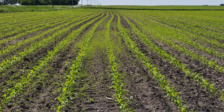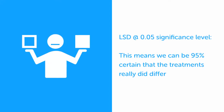A well laid out trial where we randomize and replicate treatments helps account for underlying sources of variability and allows for calculation of the LSD. The LSD is calculated at a specific level of significance. When you see the LSD calculated at the .05 level, for example, this means we can be 95% certain that the treatments or hybrids really did differ in yield if the difference between them was equal to or greater than the LSD. A significance level of .05 or .1 are most commonly used in agricultural research, although you may occasionally see it calculated at the .2 level.